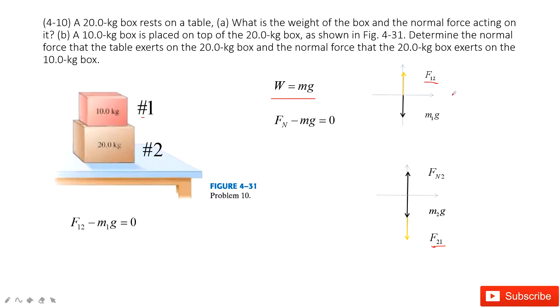First, we look at box 1. Because the box is stationary, acceleration is 0. The net force is F12 minus M1g. So this force minus this one equals 0.